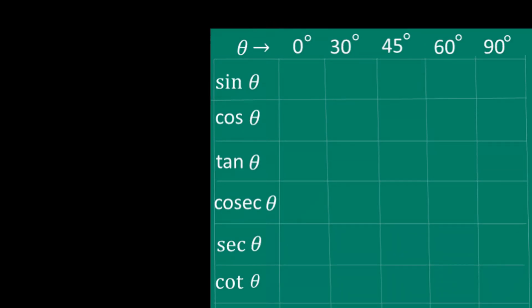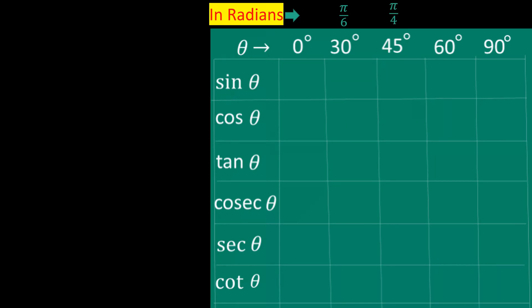First, we create a table like this. Sine, cos, tan and their reciprocals are written in the first column, and in the upper row we write the angles in degrees and radians. We know pi radians is equal to 180°, therefore 30° is equal to pi by 6 radian, 45° is equal to pi by 4 radian, 60° is equal to pi by 3 radian.